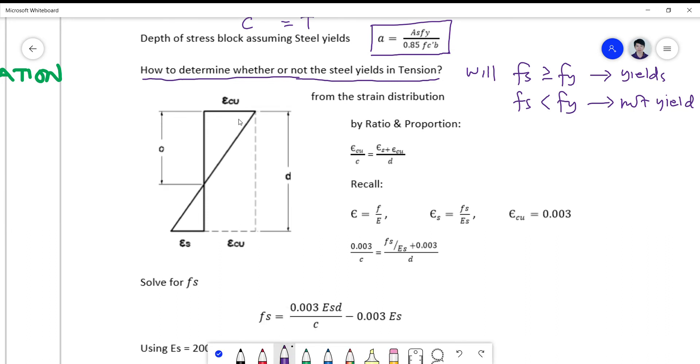So we can verify that easily by deriving a formula for fs using a strain distribution diagram. Let's take note that the ultimate strain is 0.003 as given in your assumption in the ACI. In other codes it may be different, but using ACI and NSCP codes, the value of epsilon cu normally is 0.003. And if we are going to use this triangle and this triangle here as basis of your derivation or the ratio proportion, we get epsilon cu is to c all over c is equal to epsilon s plus epsilon cu is to d.